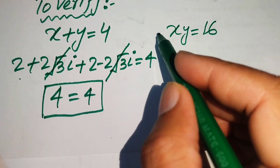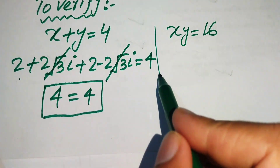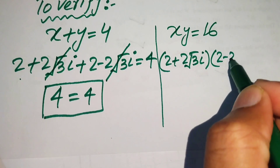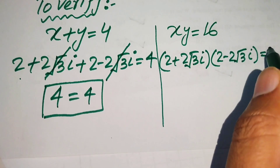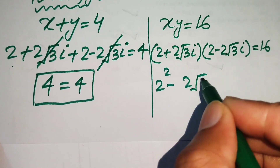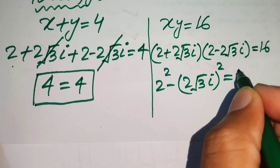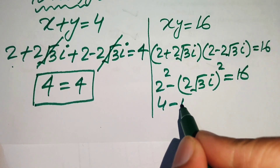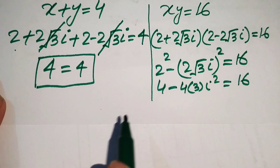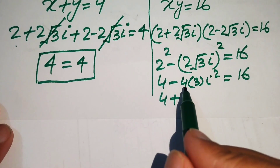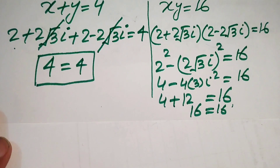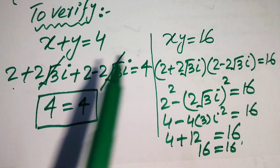For equation two, xy: (2 + 2√3·i)(2 − 2√3·i). Using the difference-of-squares identity: 2² minus (2√3·i)² = 4 minus 4×3×(−1) = 4 + 12 = 16. This equals 16, so the second equation is also satisfied.